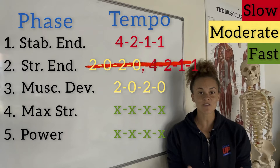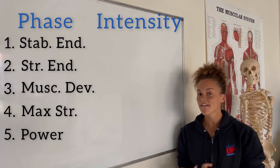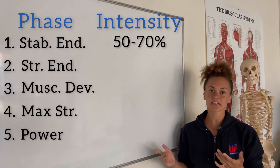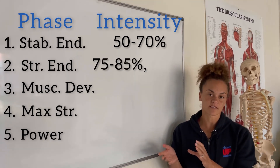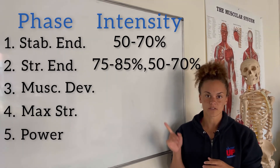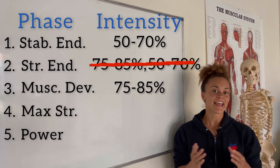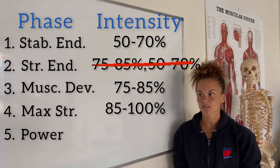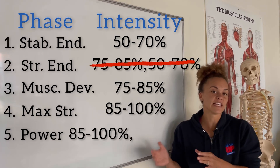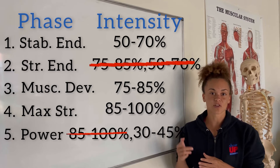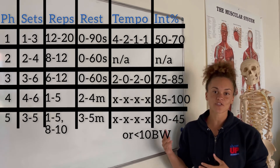I wouldn't worry about the tempos for phase 2, so just cross those out. And lastly, intensity — it increases as we go through the phases. Phase 1: 50-70%. Phase 2 has a superset, so don't worry about memorizing that. Phase 3: 75-85%. Phase 4: 85-100%. Phase 5 is also a superset — the first strength exercise is 85-100%, and the explosive exercise — the key one for the NASM CPT — is either 30-45% intensity or less than 10% of your body weight. Those are the key acute variables.